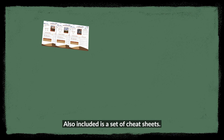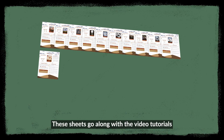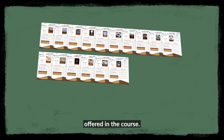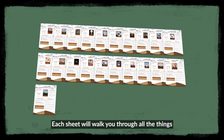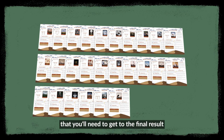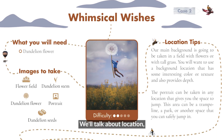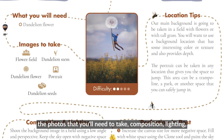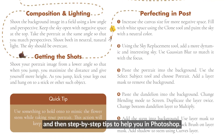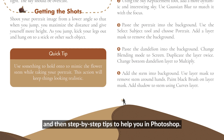Also included is a set of cheat sheets. These sheets go along with the video tutorials offered in the course. Each sheet will walk you through all the things that you'll need to get to the final result that you're looking for. We'll talk about location, the photos that you'll need to take, composition, lighting, and then step-by-step tips to help you in Photoshop.